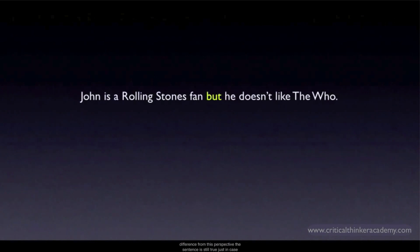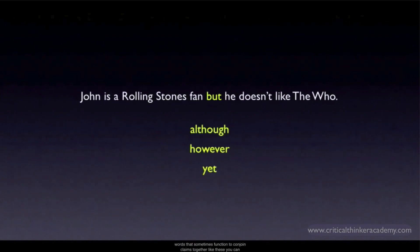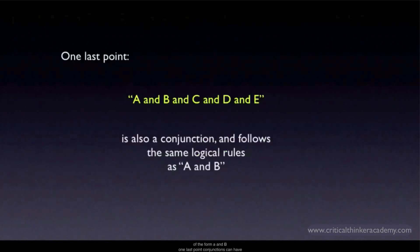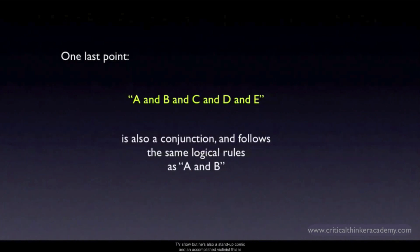There are other words that sometimes function to conjoin claims — like 'yet,' 'moreover,' 'although.' From the standpoint of propositional logic, all of these represent the same conjunction, a claim of the form A and B. Conjunctions can also have more than two component claims. This is still a conjunction and follows the same rules: it's true as a whole just in case all the component claims are true, and false otherwise. A conjunctive sentence is true if and only if all its component conjuncts are true.